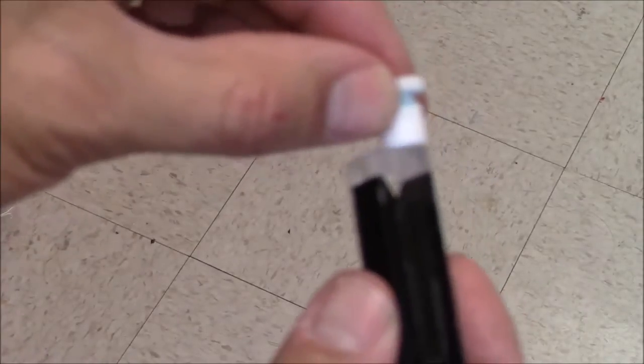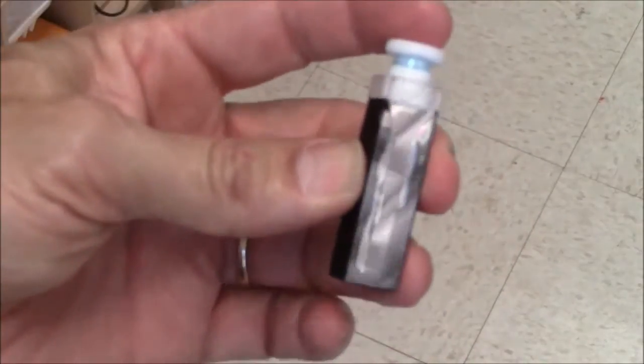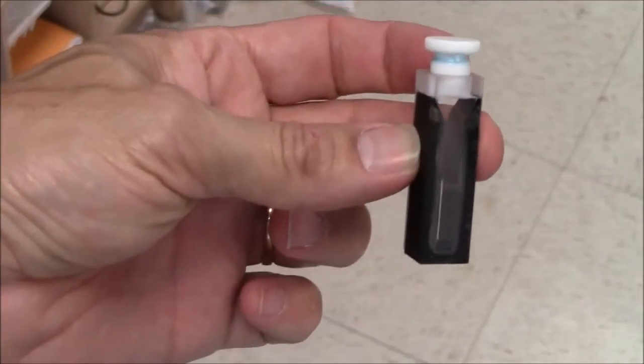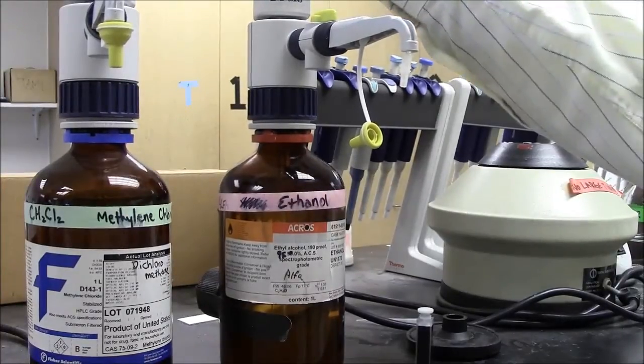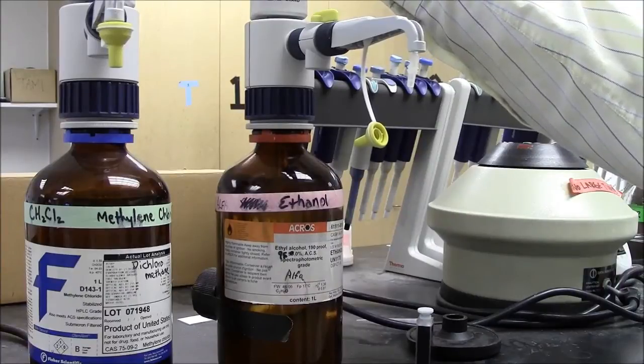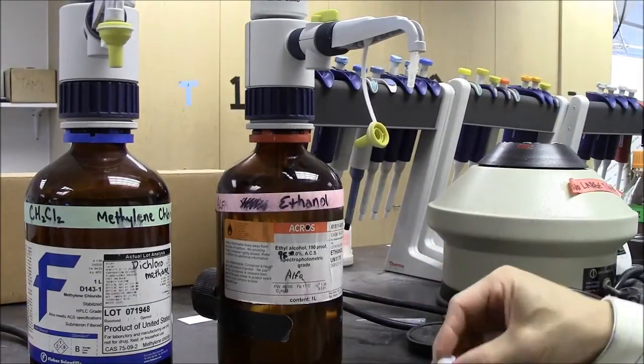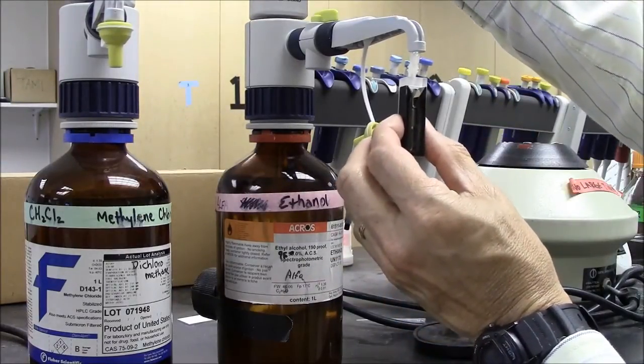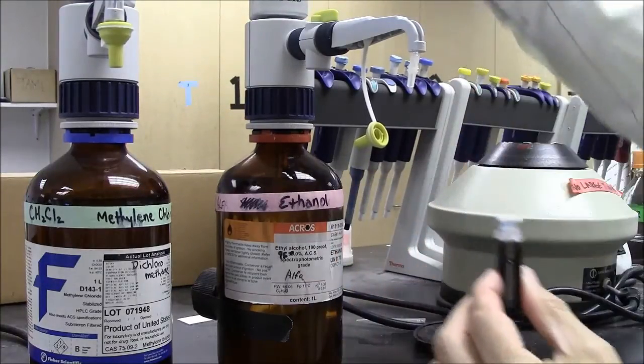It also comes with a stopper so that you can easily seal the top and mix your contents, or save it so that no solvent evaporates. Typically, the first thing you do with your cuvette is to fill it with some clean solvent. In this case, I'll use spectrophotometric grade ethanol. I'm putting in 0.95 milliliters, which is the equivalent of 950 microliters.